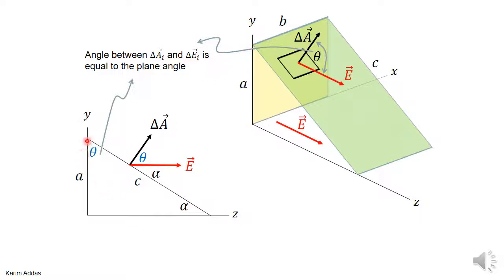The distance from one end to the other along the inclined side is C — that's this length here. The side view is important for determining the equivalence between theta (the angle between E and the area vector) and the angle in the triangle, because cosine theta will be much easier to obtain from the triangle.